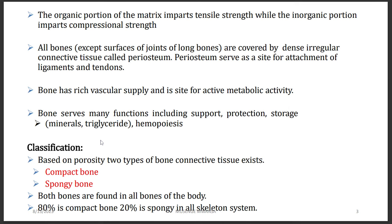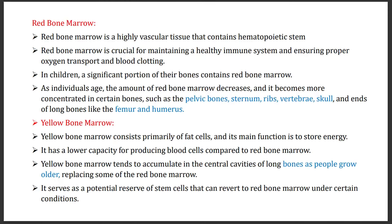Bone is classified as either compact or spongy. Compact bone makes up 80% and spongy bone makes up 20% of a given bone. We also have red bone marrow, which is highly vascular, containing hematopoietic stem cells. It is in the bone marrow where we find cells that make all blood cells. Red bone marrow is very important in maintaining a healthy immune system.